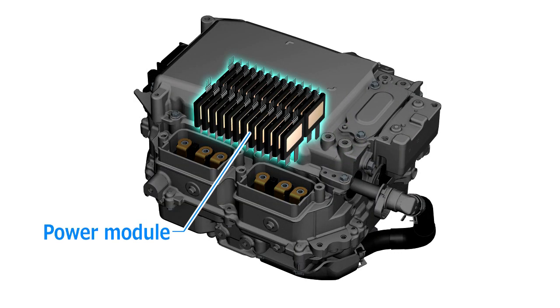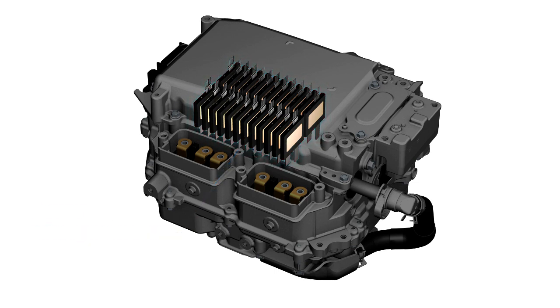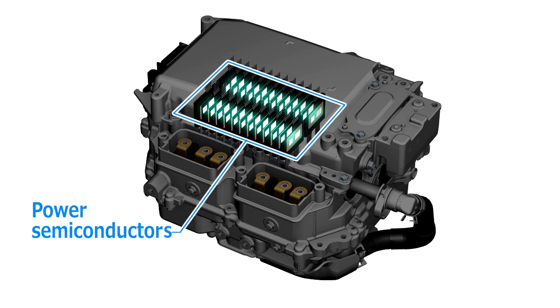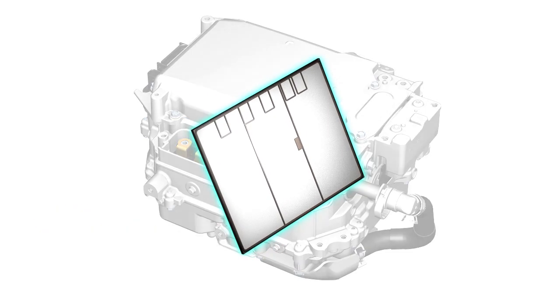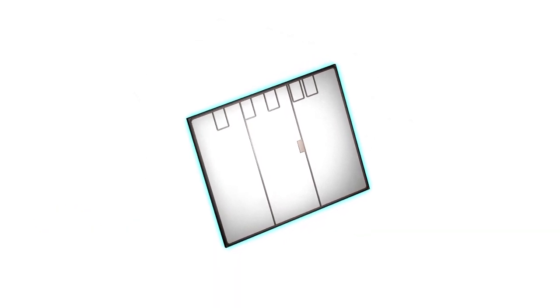PCUs contain power semiconductors which turn electrical current on and off. Each device carries a large electrical current and can insulate a large voltage. An estimated 20% of total HV electrical power loss is associated with power semiconductors alone.